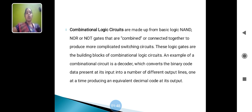An example of a Combinational Circuit is a decoder, which converts the binary code data present at its input into a number of different output lines, one at a time, producing an equivalent decimal code at its output.